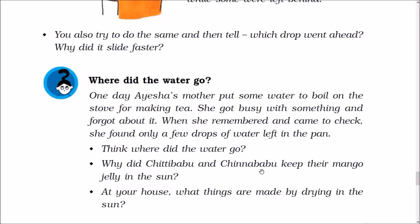Why did Chitti Babu and Chinna Babu keep their mango jelly in the sun? They kept their mango jelly in the sun so that the water from the jelly could evaporate. What other things are made by drying in the sun?